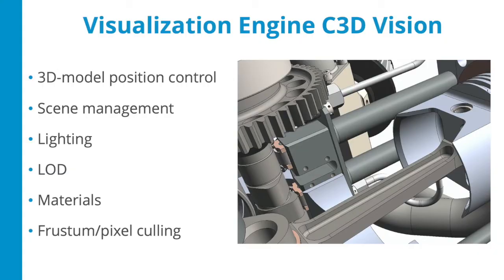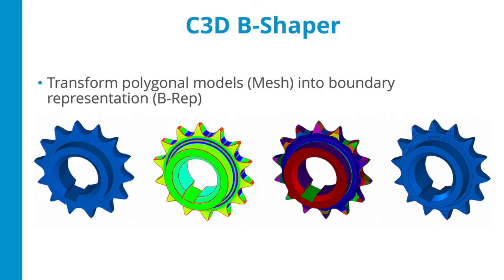C3D Vision is a visualization engine based on OpenGL, currently for desktop applications. You can visualize 3D models with special CAD functionality including 3D model position control, scene management, lighting and material settings, level of details, and productivity tools like frustum culling and pixel culling. The last module is C3D B-Shaper, which transforms polygonal models and meshes into boundary representation (B-rep).